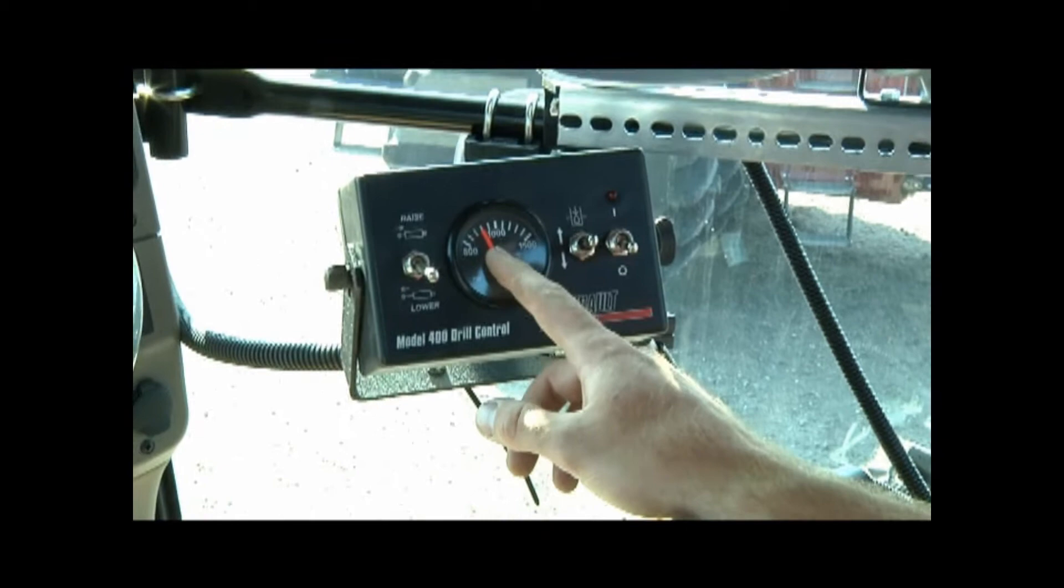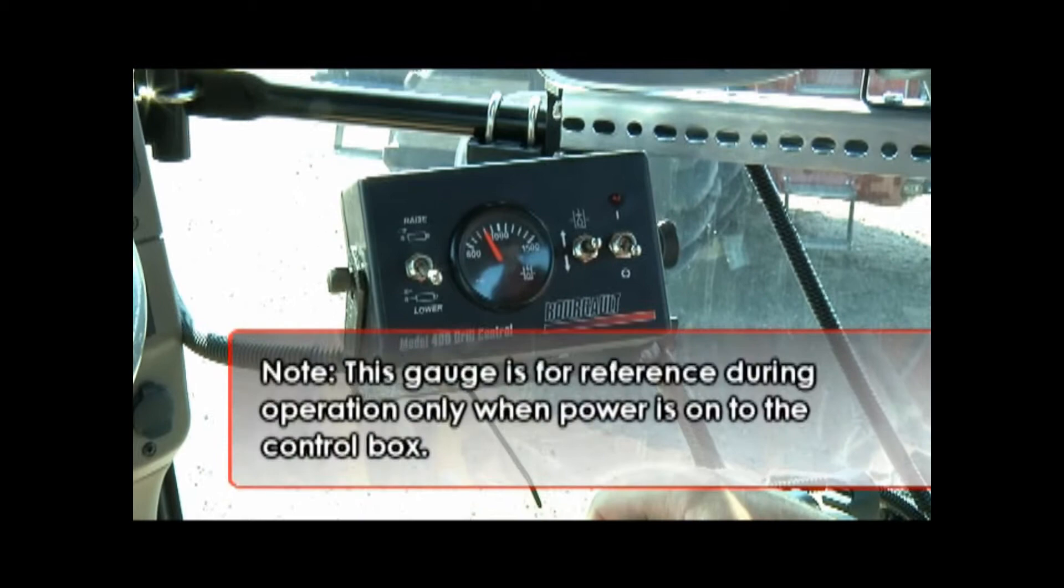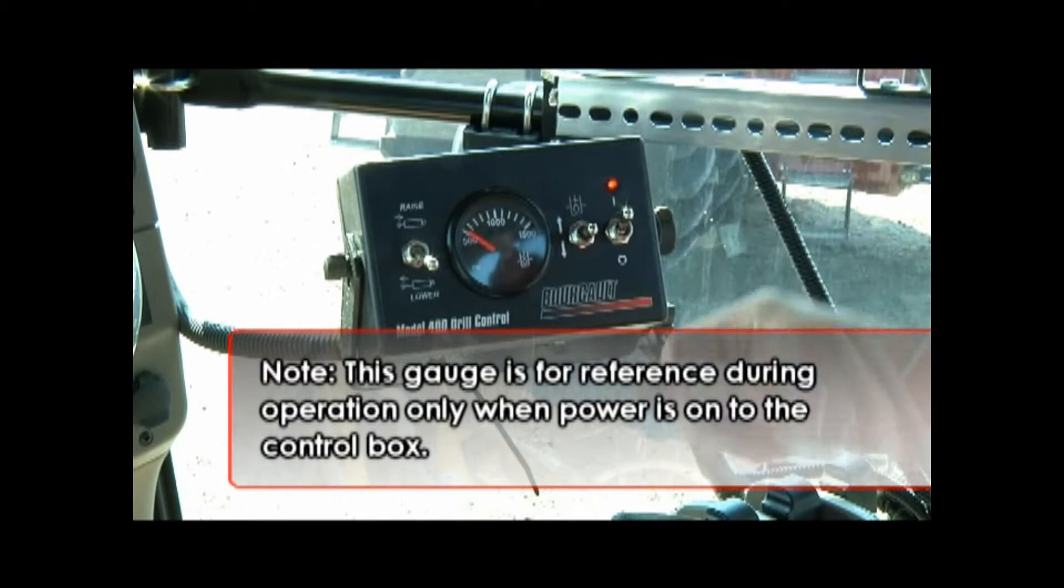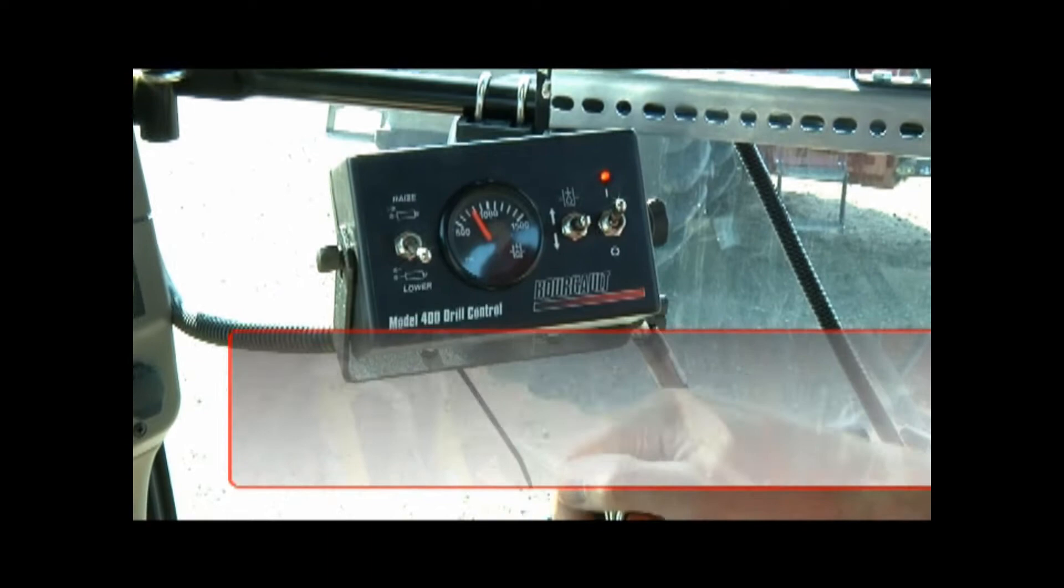Note that the pressure gauge is electric and will retain the last known pressure when power is turned off. This gauge is for reference during operation only when power is on to the control box. Refer to the operator's manual for details and schematics for the control box.